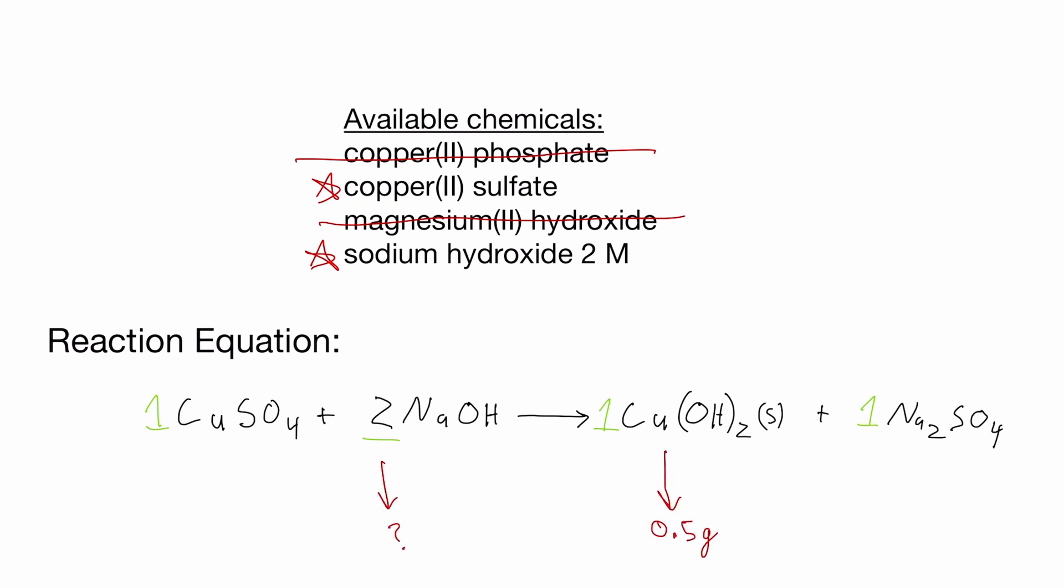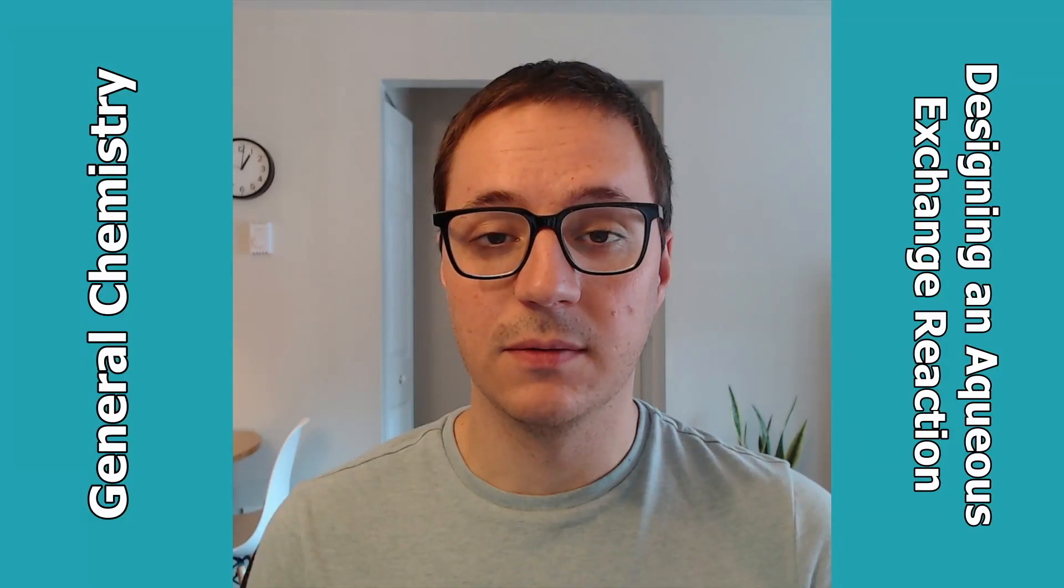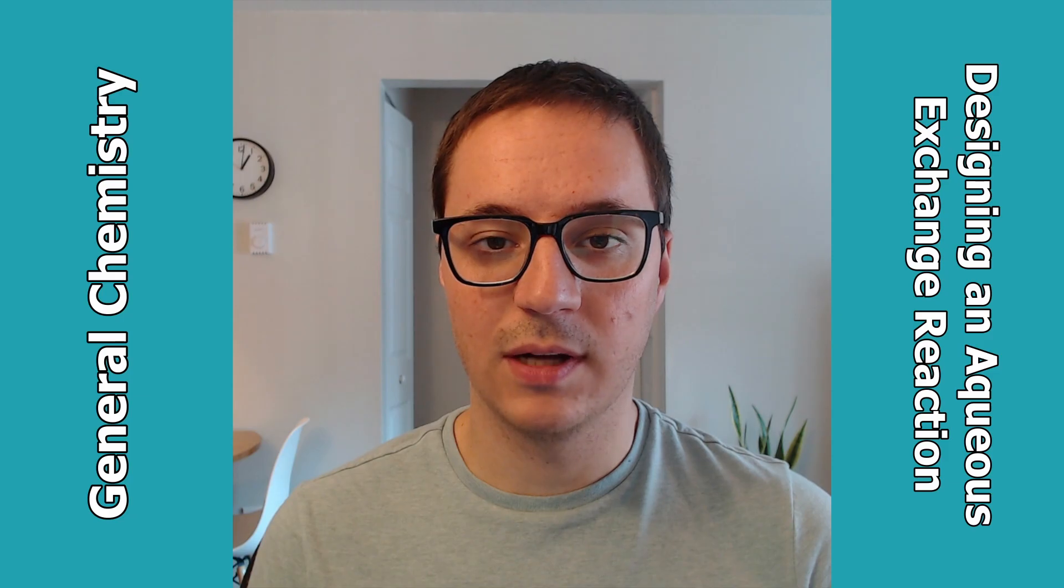Since our target amount is given in units of mass, we'll need to first convert into moles. By dividing 0.5 grams of copper hydroxide by the molar mass, we get 0.005125 moles of copper hydroxide.